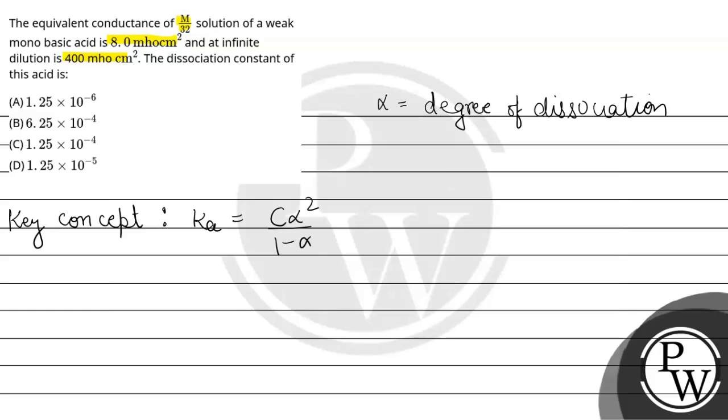C is the concentration which is given. We need to find out the value of alpha using lambda, the molar conductance, and lambda naught, the molar conductance at infinite dilution.